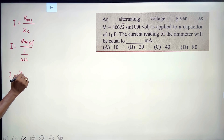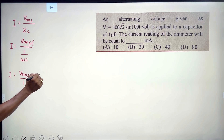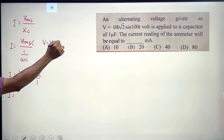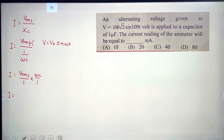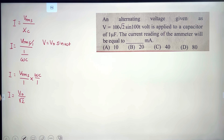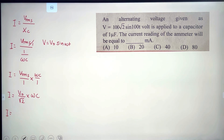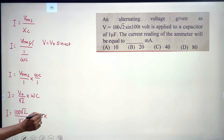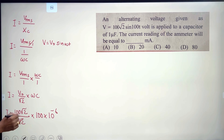The RMS current is I_rms = V_rms × ω × C. Here V_rms = 100√2 / √2 = 100 volts, ω = 100, and C = 1 × 10⁻⁶ farads. The √2 terms cancel, giving I_rms = 100 × 100 × 10⁻⁶ = 10 × 10⁻³ = 10 milliamperes.